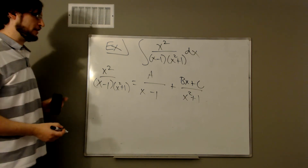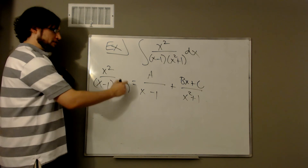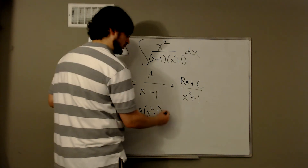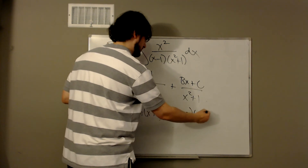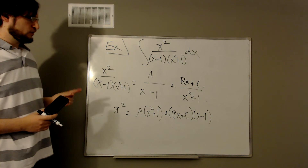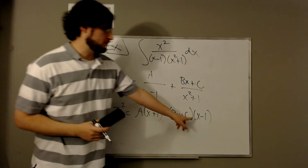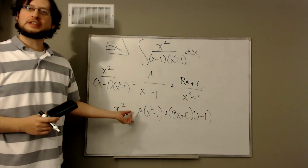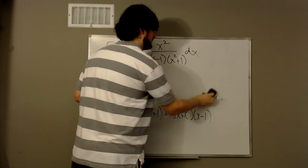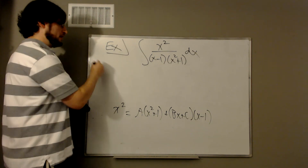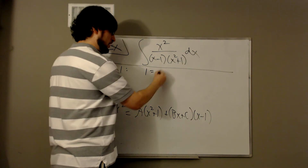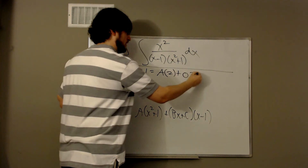Then we go through the same process. Multiplying everything by the denominator, we get x squared equals a times x squared plus 1 plus bx plus c times x minus 1. There's only one nice value to plug in, which is x equal 1. That makes the bx plus c term go to 0, giving 1 equals a times 2, so a is 1 half.